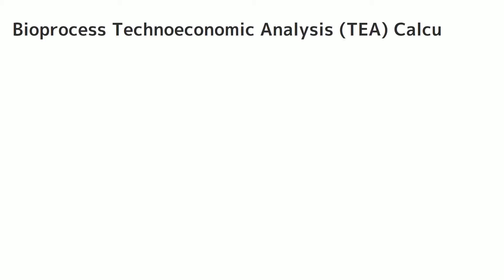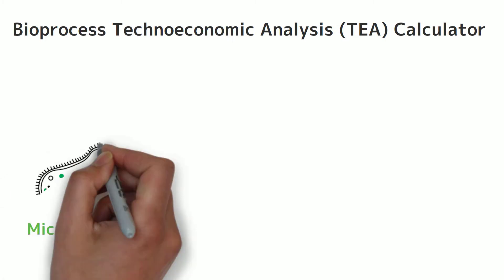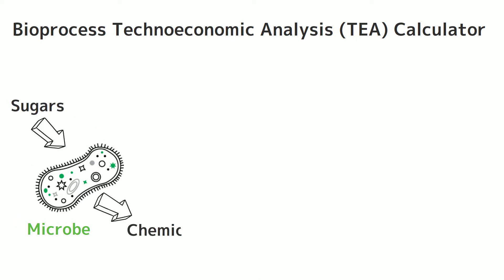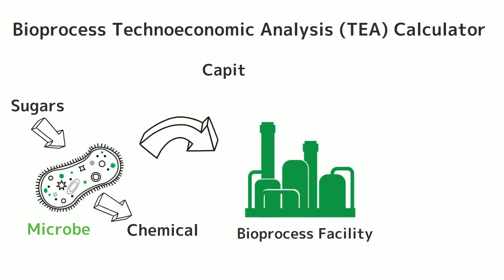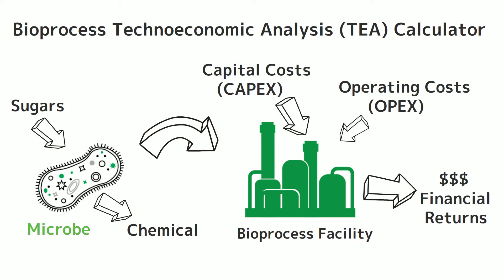Welcome to the Bioprocess Techno-Economic Analysis calculator. This calculator can be used to estimate the cost of a generic large-scale bioprocess which relies on a microbial conversion of sugars to a target chemical. The microbe is used in a newly constructed bioprocess facility. This calculator estimates the costs associated with construction of the facility, or capital costs, as well as the operating costs needed to produce the chemical, enabling estimates of financial returns.